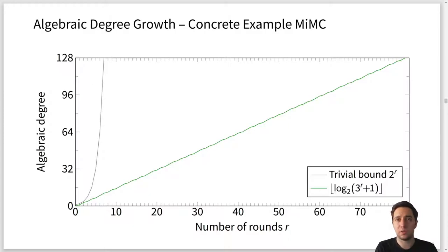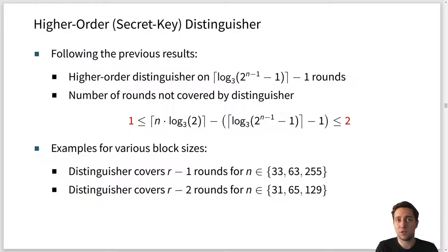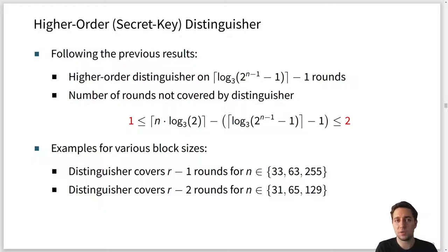Now, how can we use this to build distinguishers? We already have, according to this result, a higher-order distinguisher covering R_Q minus 1 rounds. The number of rounds not covered by the distinguisher in the case of MiMC is either 1 or 2 — I've marked those in red to emphasize this. So besides these two cases, all remaining rounds are covered. To give examples: the distinguisher covers R minus 1 rounds for the 33-bit version of MiMC, and R minus 2 rounds for the 129-bit version. There are no other cases — either R minus 1 or R minus 2 rounds are covered, where R is the original round number.